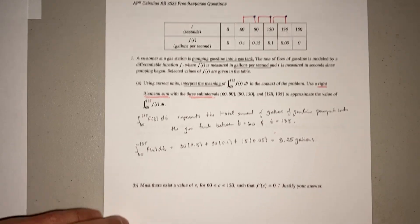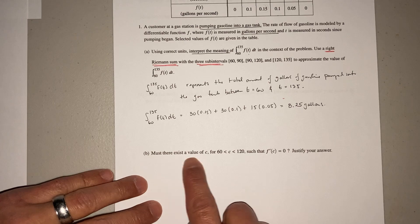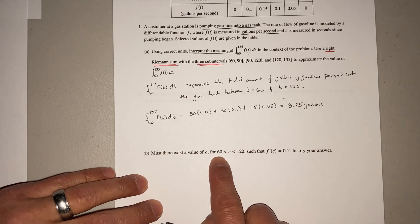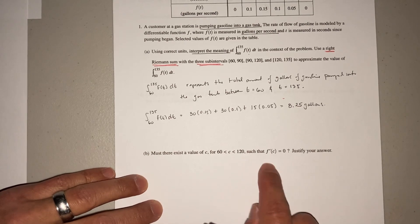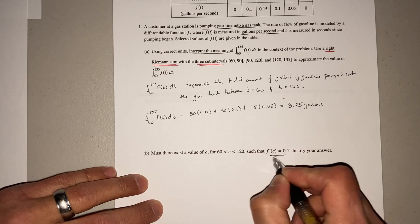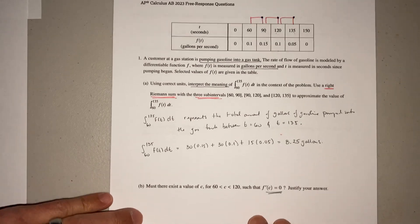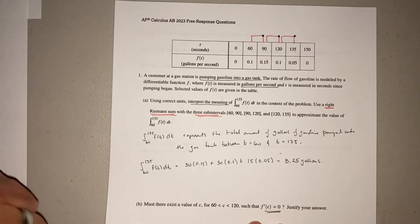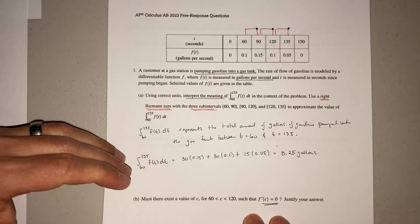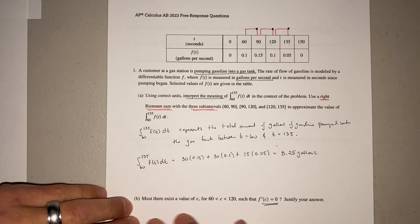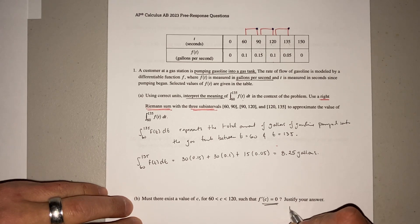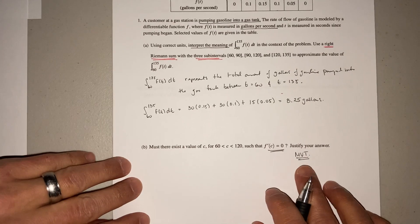For letter B, it says must there exist a value of C between 60 and 120 such that F prime of C equals 0? Now, oftentimes when I see a table question, I think they're going to ask me for a rate of change. In this case, in part A, they didn't. But in part C, they asked me for the mean value theorem. Make sure you know the mean value theorem.